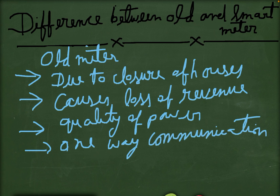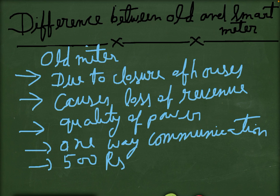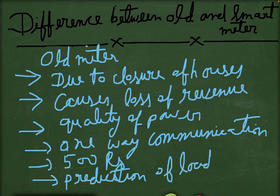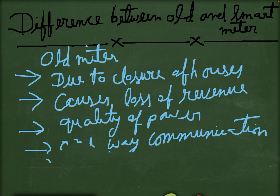One advantage of the old meter is that the price is very small — only 500 rupees according to Indian standards. The next point is that the prediction of load is difficult in the case of the old meter. These are the points regarding the old meter.